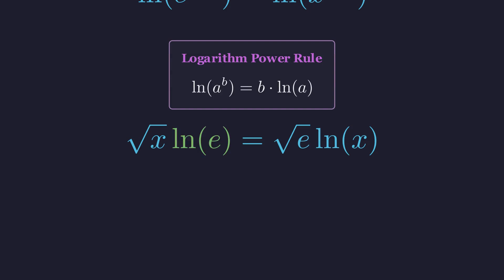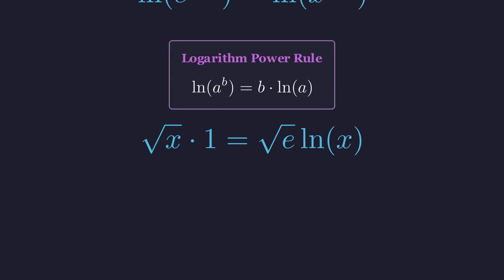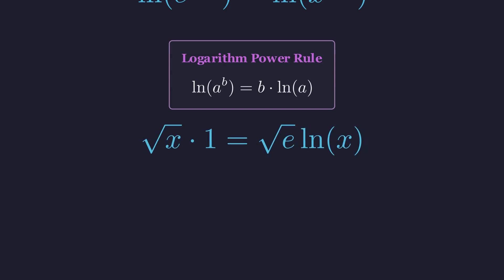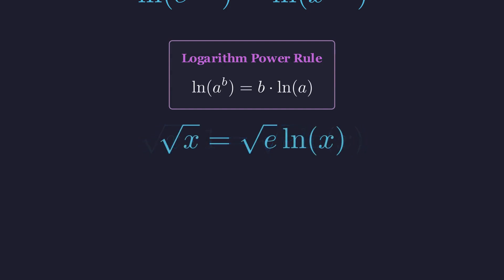By definition, the natural logarithm of its base e is exactly 1. Substituting this value simplifies the left side, and this leaves us with the core simplified form of our equation.